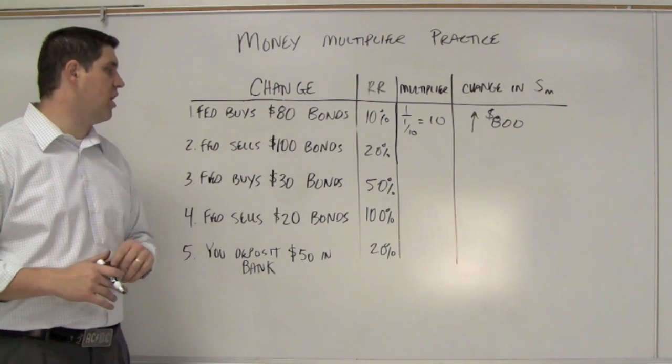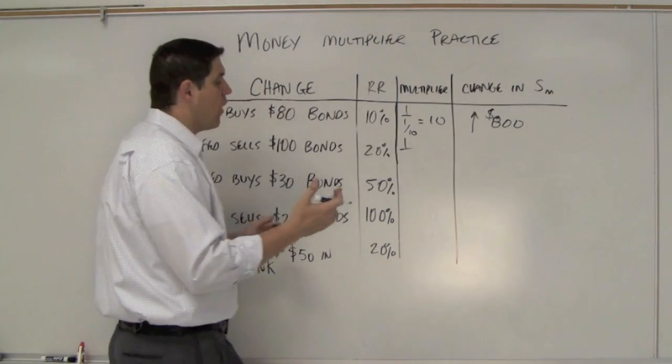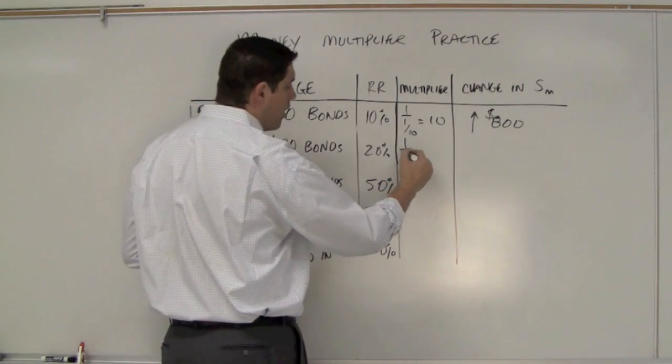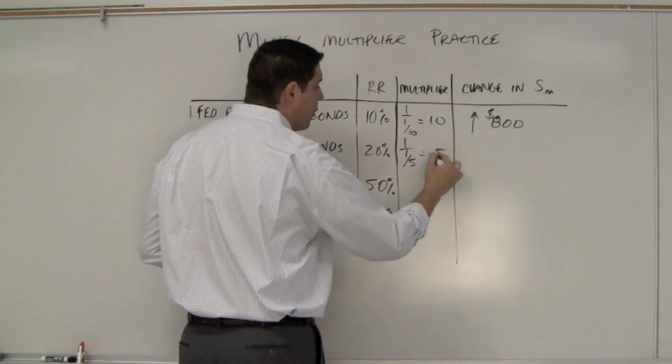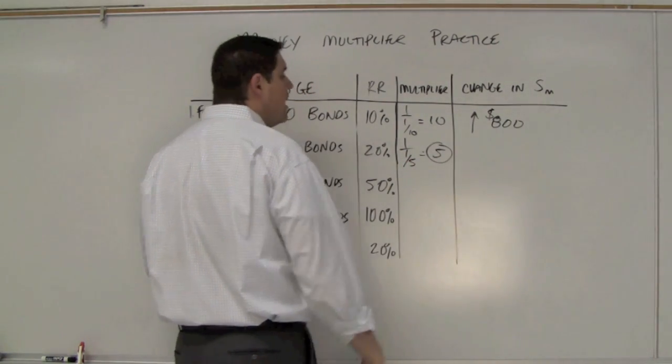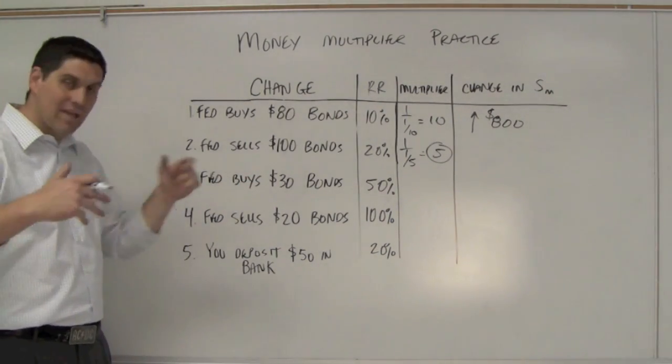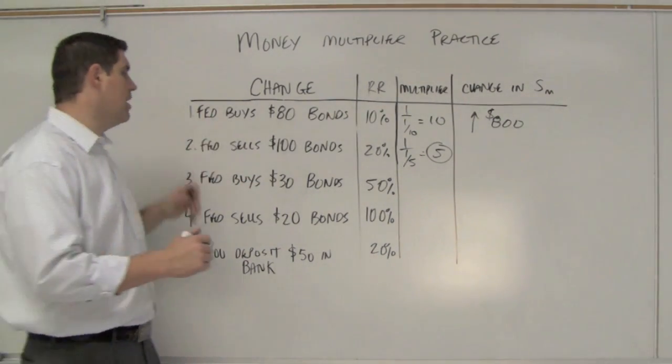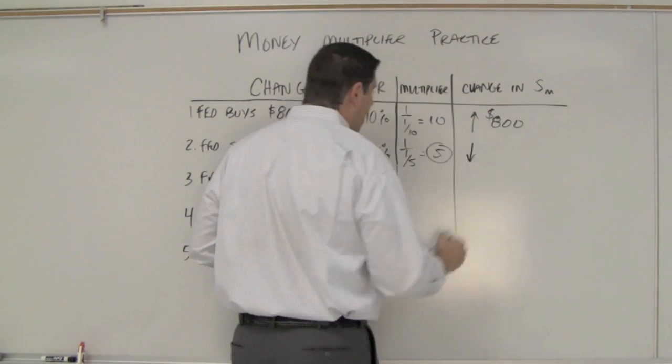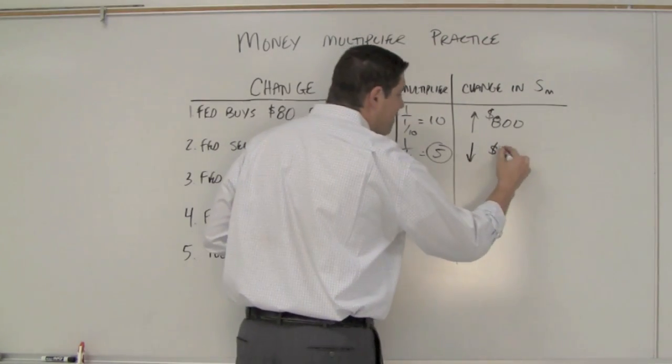How about if the Fed sells $100 worth of bonds? The reserve requirement is 1 over 0.2 or 1 over 1/5, so the multiplier is 5. If the multiplier is 5, that $100 taken out of the economy when the Fed sells them would decrease the money supply by $500.